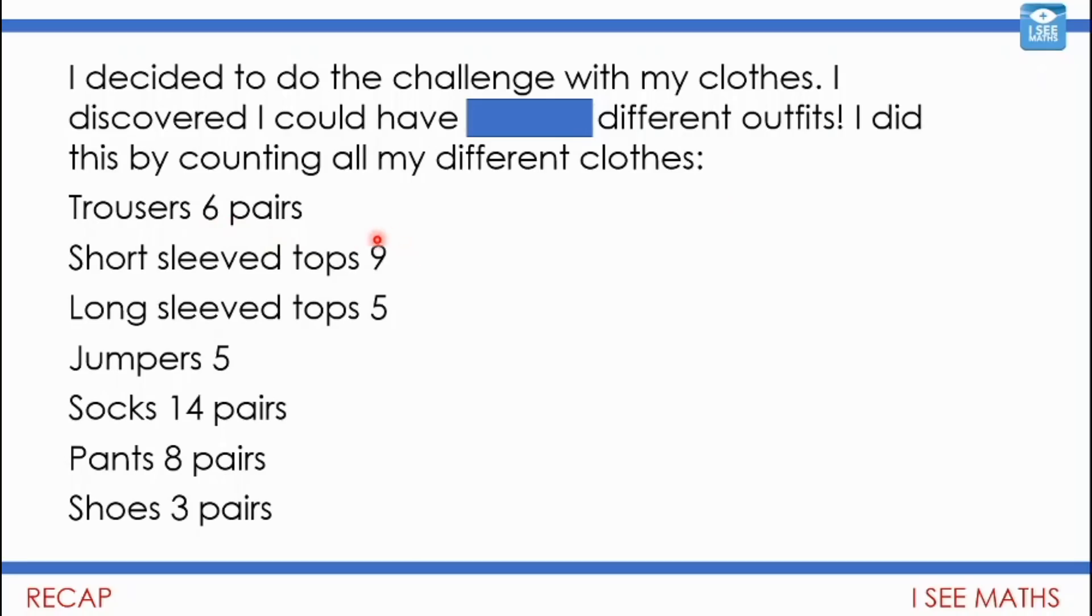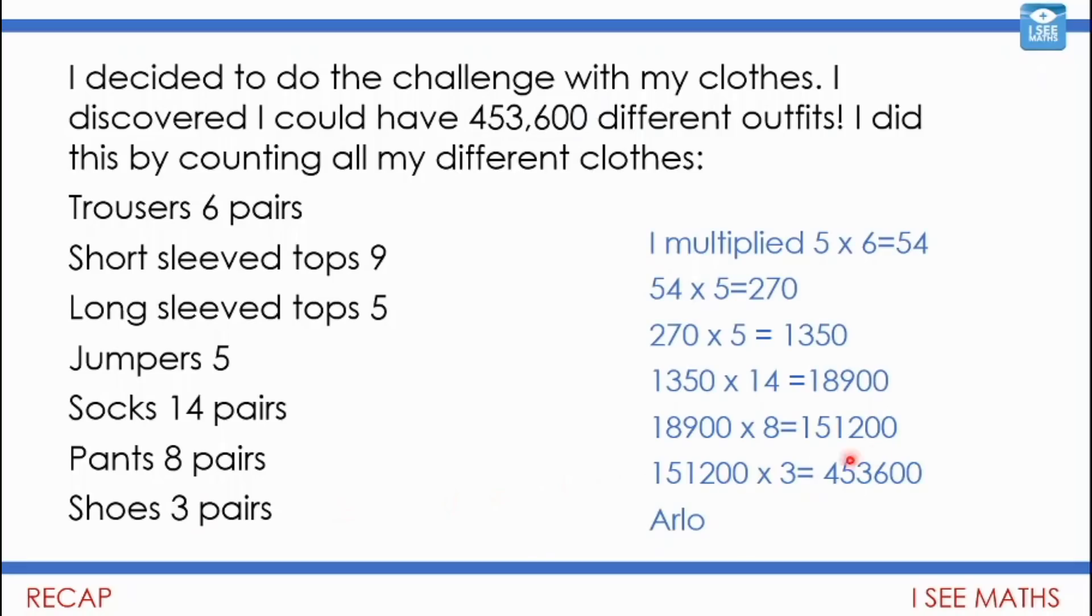I did this by counting all my different clothes. This gave me a real shock when I saw, anyway this was Arlo's clothes. Six pairs of trousers and nine short sleeve tops and so on, five long sleeve tops, five jumpers, fourteen pairs of socks, eight pairs of pants and three pairs of shoes. And then well how many possible outfits could there be? Look Arlo has shown these workings for all these multiplications that were done. And then look at this number of possible outfits. 453,600 different ways you could get changed. It made me think like how long would it take getting ready in the morning if we thought about all the different ways we could get changed. Arlo absolutely fantastic seeing how you've gone away and made this your own and well done.